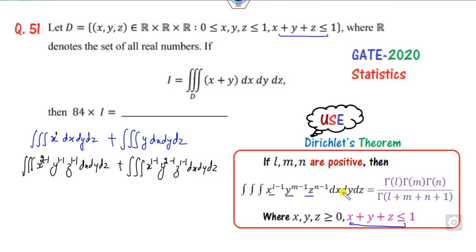Now you can apply this formula. What is the result for that? This is gamma function of 2 times gamma function of 1 times gamma function of 1, divided by L plus M plus N plus 1, that is gamma function of 5. Same for here: gamma function of 1 times gamma of 2 times gamma of 1 upon gamma of 5.